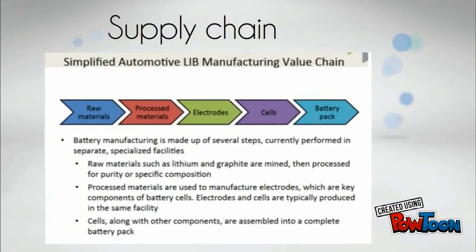Raw materials such as lithium and graphite are mined and then processed for purity or specific composition. Processed materials are used to manufacture electrodes, which are key components of battery cells. Cells along with other components are assembled into a complete battery pack.